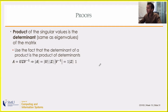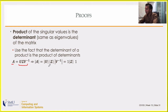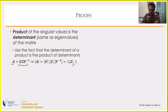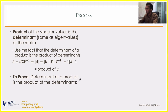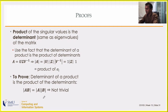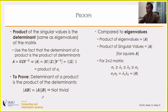The product of singular values equals the determinant of the matrix, analogous to how the product of eigenvalues gives the determinant. This follows because A = UΣV^T, and the determinant of a product is the product of the determinants. Since U and V are orthonormal, their determinants are ±1, leaving the determinant of the diagonal matrix Σ — the product of its diagonal entries. Note this applies only to square matrices.